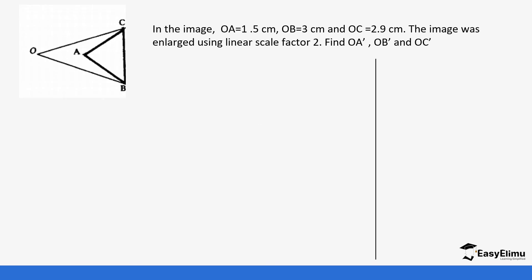Let's look at a few examples. You have been given an object with OA = 1.5 cm, OB = 3 cm, and OC = 2.9 cm, with a scale factor of 2. If you attach a line to OA, this is going to be 1.5 cm and OB is 3 cm. To find OA', it is OA times the scale factor: 1.5 times 2, which gives us 3 cm.